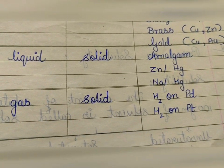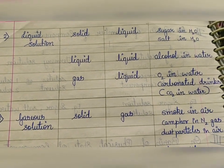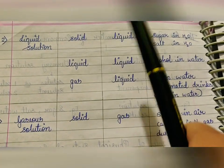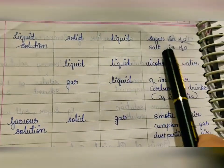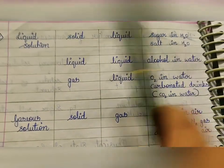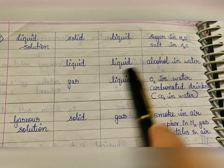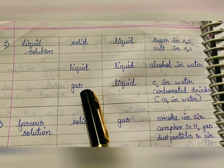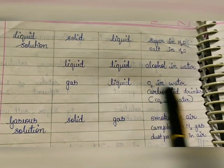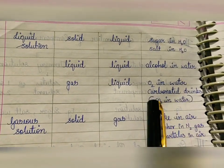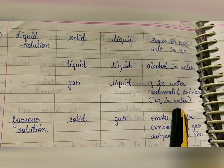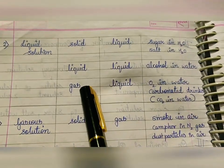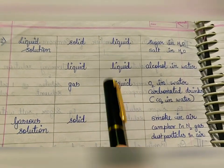Next is liquid solution. If solute is solid and solvent is liquid: sugar in water, salt in water. If solute is liquid and solvent is also liquid: alcohol in water. If solute is gas and solvent is liquid: oxygen in water, carbonated drinks containing carbon dioxide in water — your soda water and soft cold drinks — are examples of a gas-in-liquid type solution.